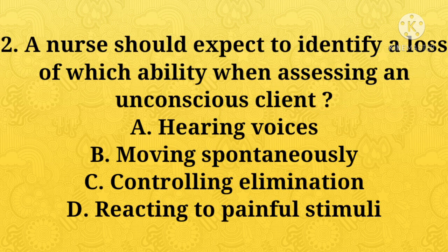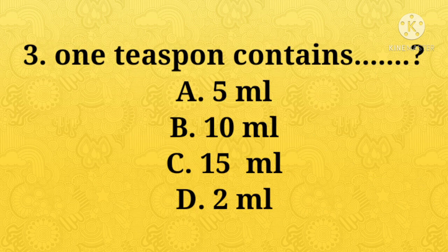A nurse should expect to identify a loss of which ability when assessing an unconscious client? A: hearing voices, B: moving spontaneously, C: controlling elimination, D: reacting to painful stimuli. Option C, controlling elimination, is the right answer. One teaspoon contains — A: 5 ml, B: animal, C: 15 ml, D: 2 ml. Option A, 5 ml, is the right answer.